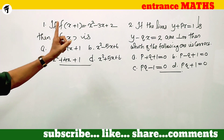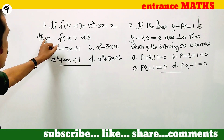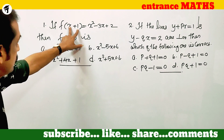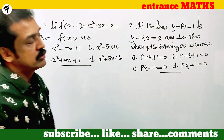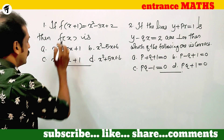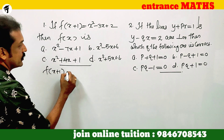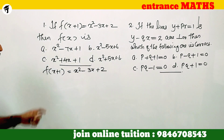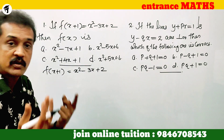If f of x plus 1 is equal to x squared minus 3x plus 2, then what is f of x? We are given f of x plus 1 is equal to x squared minus 3x plus 2, and we need to find f of x.